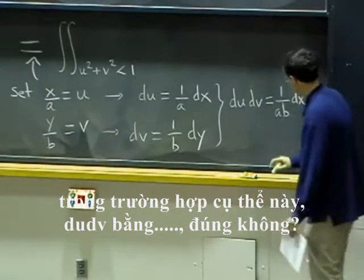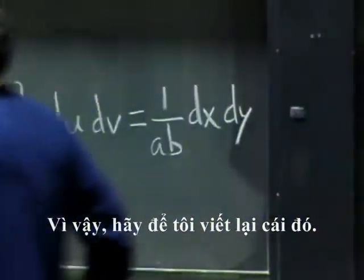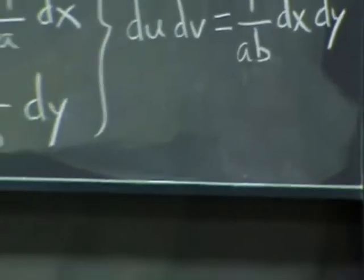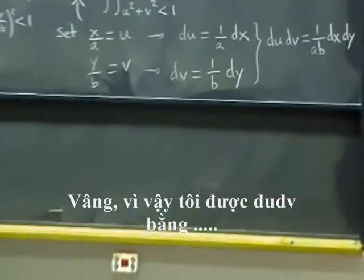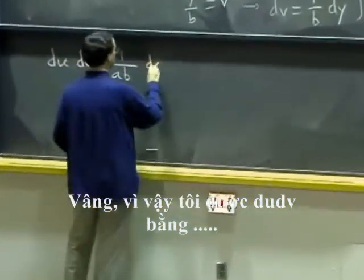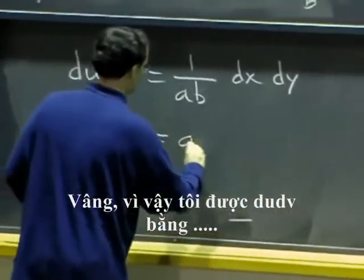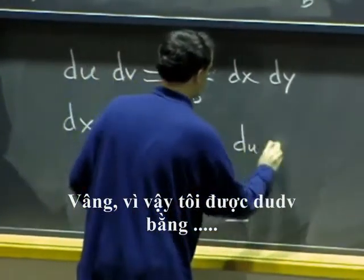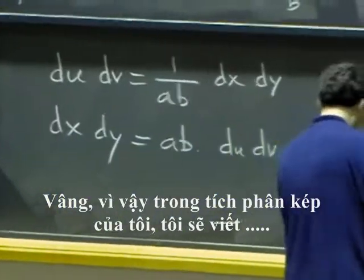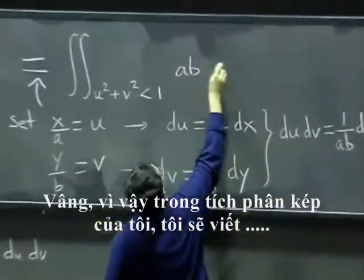So let me rewrite that. I get du dv = (1/ab) dx dy. Or equivalently, dx dy is ab times du dv. So in my double integral, I am going to write ab du dv.